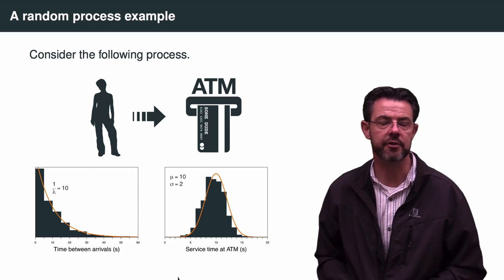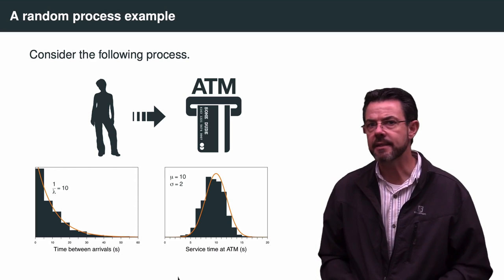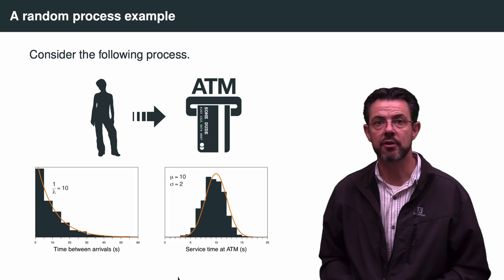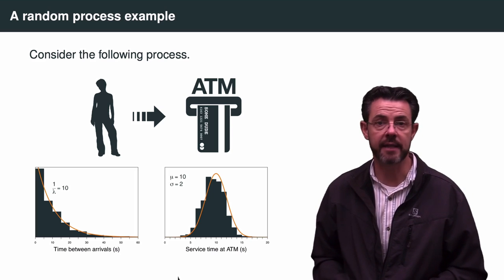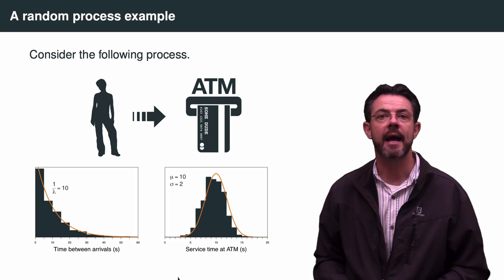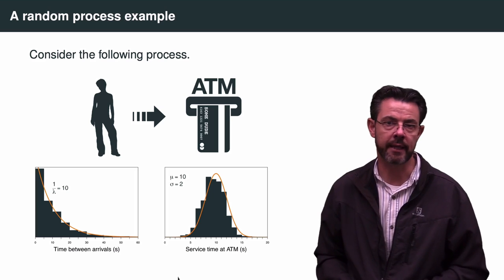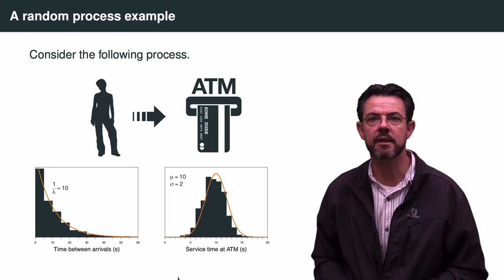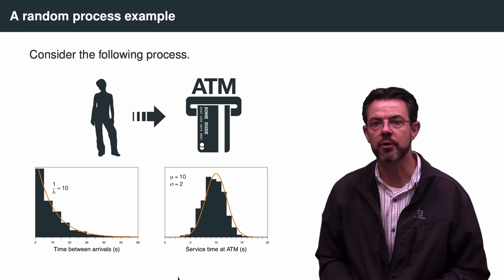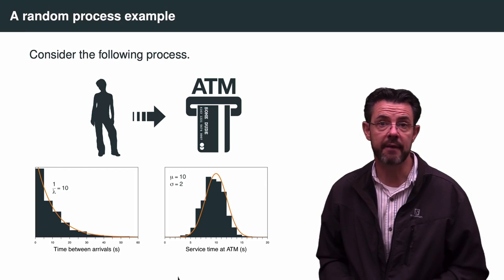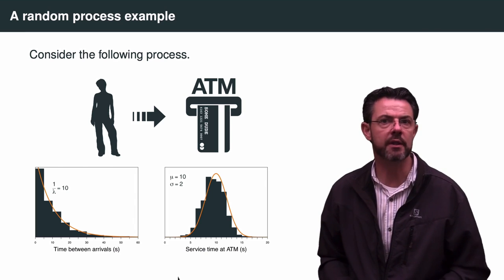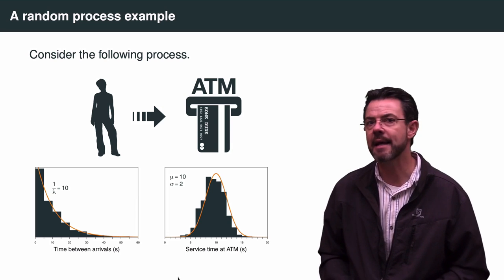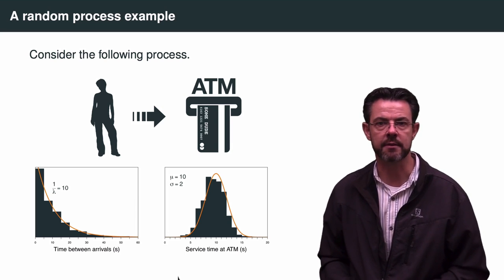The second step in this random process is the person actually getting to the ATM, inserting their card, and withdrawing cash. Here we're going to assume a normal distribution with parameters mean equals 10 seconds and a standard deviation of 2 seconds.